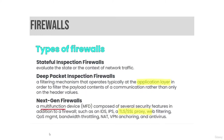Other types of firewalls include stateful inspection firewalls, deep packet inspection firewalls, and next generation firewalls. Stateful inspection firewalls evaluate the state or context of network traffic. Deep packet inspection firewalls use a filtering mechanism that operates at the application layer to filter the payload contents of a communication rather than only the header values. Next generation firewalls are multi-function devices composed of several security features including IDS, IPS, TLS/SSL proxies, web filtering, QoS management, bandwidth throttling, NAT, VPN anchoring, and antivirus.